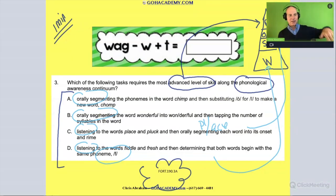Okay. How about this one right here? They orally segment the word wonderful into wonderful into its syllables. Hey, that's the syllable level. Alright. So then what are we left with?